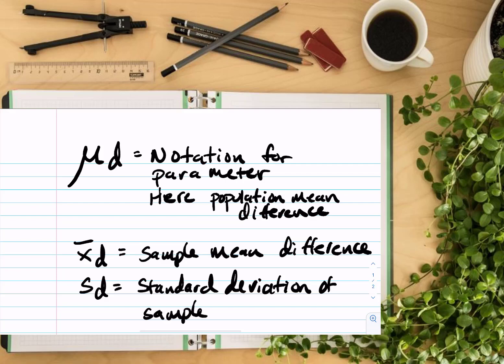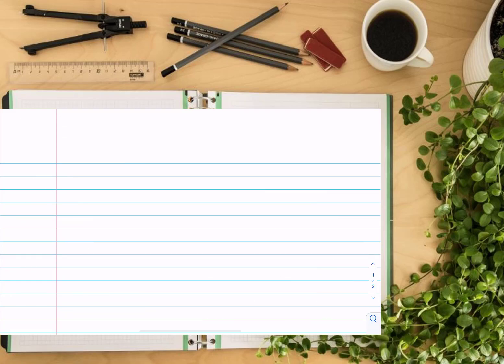So here when it has the subscript d, remember it's the same measurement as we had in past chapters. It's just the subscript denotes that we're talking about it in the context of differences. Now we still have n for sample size. That doesn't change. It doesn't get a subscript d because it is just the number of differences that we have measurements for.